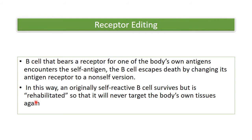A newly identified means of getting rid of the body's self-reactive B-cells is receptor editing. In this mechanism, once a B-cell has a receptor for the body's own antigen and during embryonic life the B-cell is not deleted — or it escapes death by apoptosis — it swiftly changes its receptor to the non-self version. In this way the B-cell remains there; it is not deleted but rehabilitated. Its receptor has been changed from the self version to the non-self version, so it will never target the body's own tissue and will achieve tolerance.